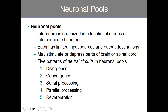These neurons tend to form neuronal pools, which are the organization of neurons into functional groups of interconnected neurons. Each has very limited input sources and output destinations, so they may stimulate or depress parts of the brain or spinal cord. There are five patterns, which we'll go through individually.